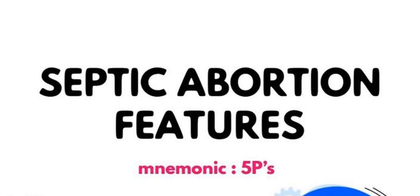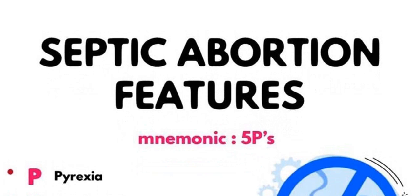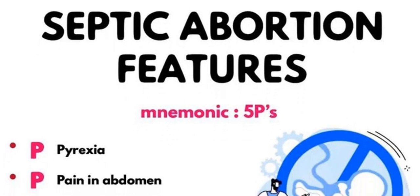In this video we will discuss the different features of septic abortion or septic miscarriage using a mnemonic. The mnemonic is very easy — five P's. The first P is Pyrexia: if the patient's temperature is very high, this is the first clinical feature of septic abortion.